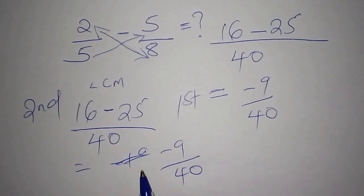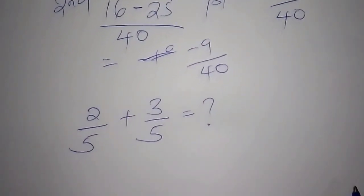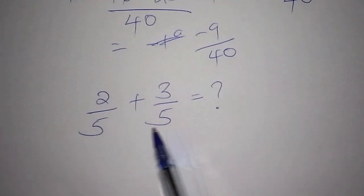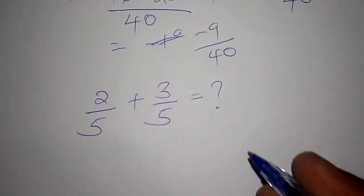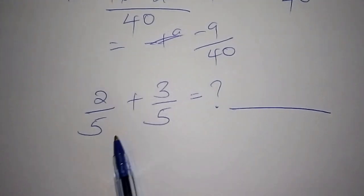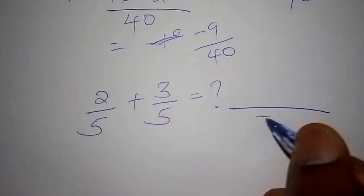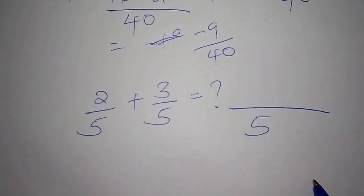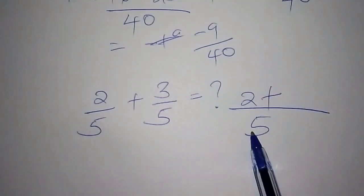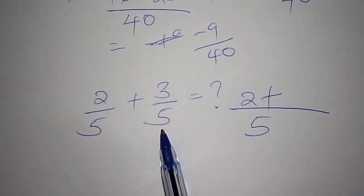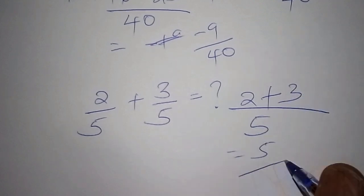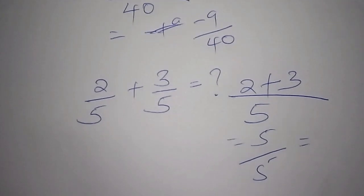Now moving to addition — when the denominators are the same, we just work it out directly. The least common multiple of 5 and 5 gives us 5. Then 5 goes into 5 one time, and 1 times 2 is 2; 5 goes into 5 one time and 1 times 3 is 3. So 3 plus 2 is 5 over 5.